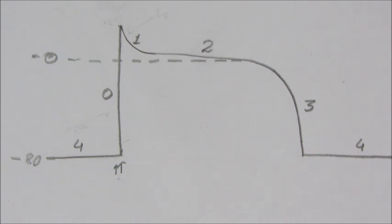As you can see, I have drawn the graph of myocardial action potential and there are four phases in the curve. These are the phase 4 which is of resting membrane potential or maximum diastolic potential, also known as maximum diastolic potential.